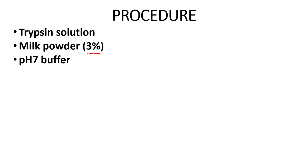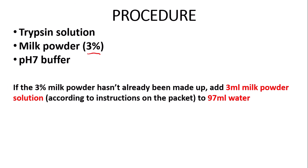You may have already had a pre-prepared three percent milk powder solution, but if not, you add three millilitres of milk powder solution — according to the basic instructions on the back of the packet — to 97 millilitres of water. That makes up your three percent milk powder solution. Now I'll be going through the more detailed procedure.